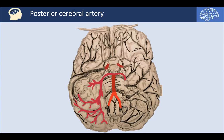From the ICA, we have a branch that goes posteriorly and medially to be joined by the PCA, contributing to the posterior circulation. That branch is the posterior communicating artery.